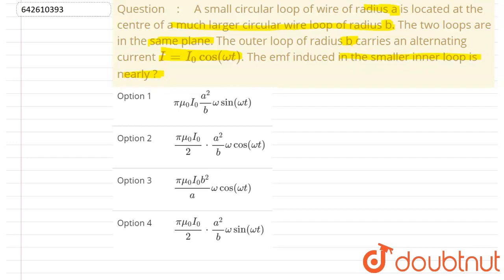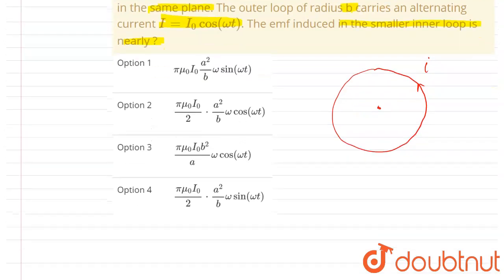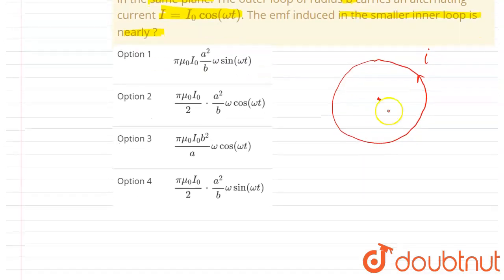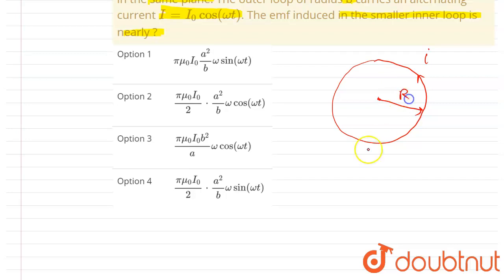So we know that in a circular current carrying loop of radius R, if the current is I, then at the center the magnetic field is mu naught I by 2R. So let's suppose this is R.